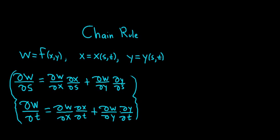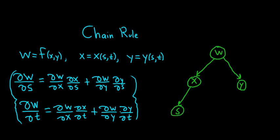Let me show you the picture. So this is w. We know w is a function initially of two variables, x and y. The thing is, x and y are both functions of two variables: x is a function of s and also of t, and likewise y is a function of s and also of t. Now we can draw things on this diagram. To get from w to x, it's a partial: ∂w/∂x. Likewise, from w to y it's a partial: ∂w/∂y.